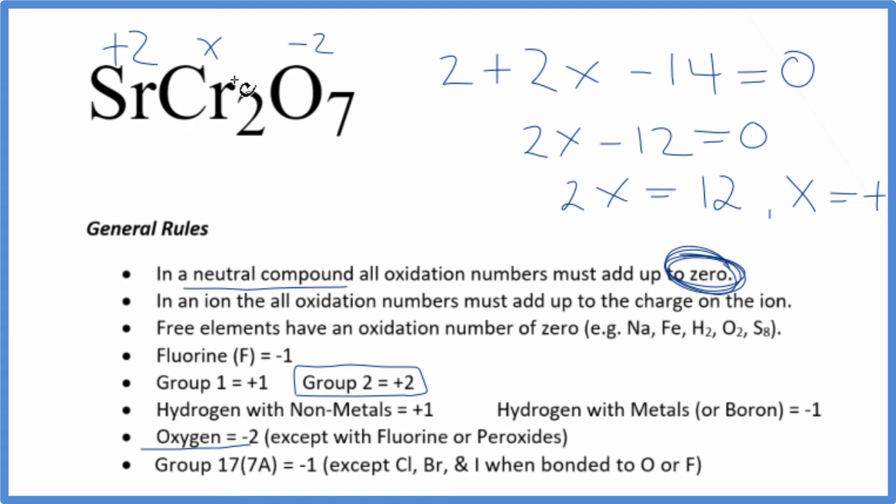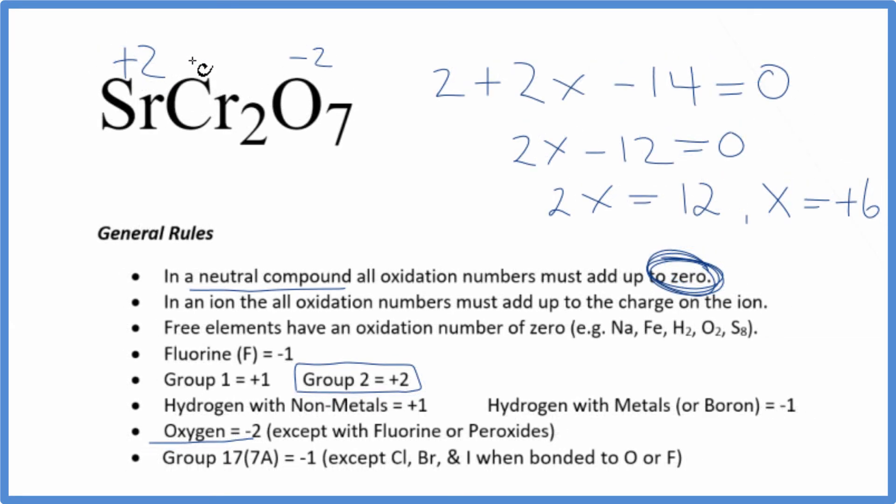So the oxidation number for each chromium in SrCr2O7, that's gonna be plus six. So these are the oxidation numbers for each element in SrCr2O7, strontium dichromate.